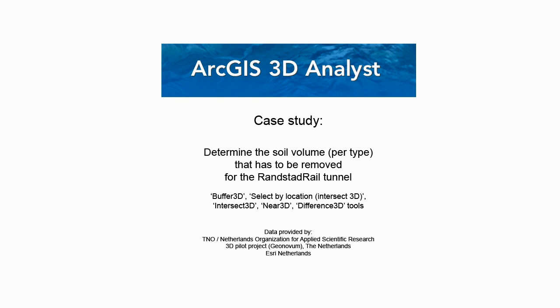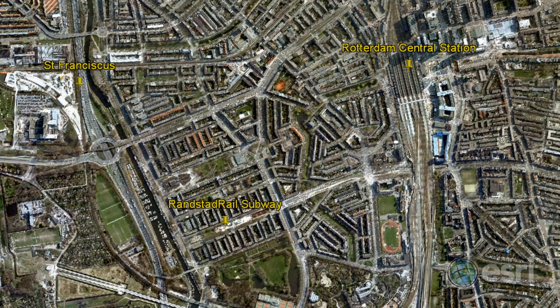In this use case we'll use 3D Analyst to calculate the volume per soil type that needs to be removed for the Randstad rail subway tunnel, seen here in red.